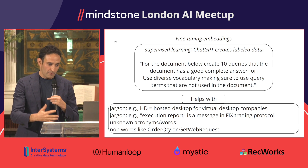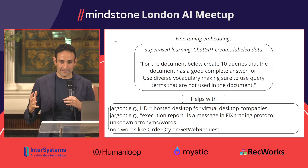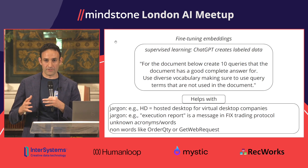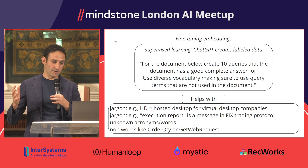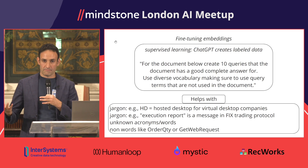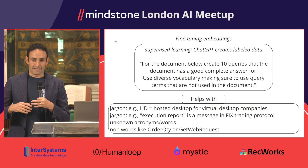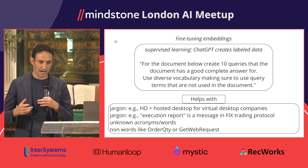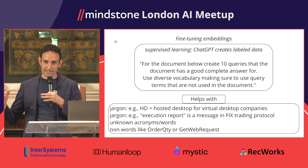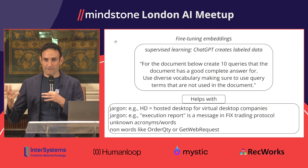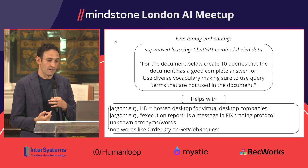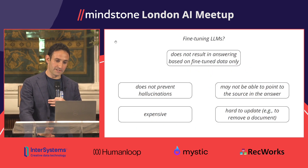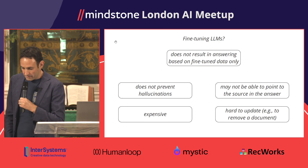Why would you fine-tune embedding models? It helps the model understand your corpus better. For example, jargon: if you're a virtual desktop provider, 'HD' may mean 'hosted desktop' rather than 'high definition.' Fine-tuning can pick that up. Similarly, 'execution report' in the context of trading platforms has a specific meaning — it's a message type — and unknown acronyms, words unique to a specific context, or function names like 'get_web_request' can all be better understood after fine-tuning.